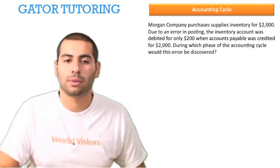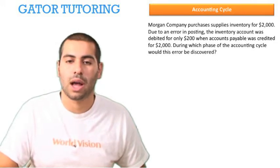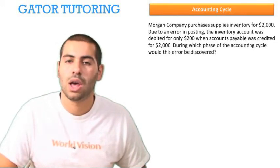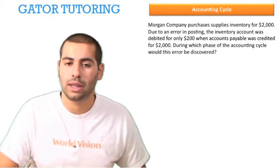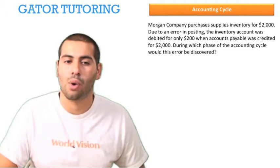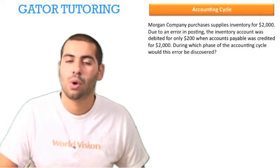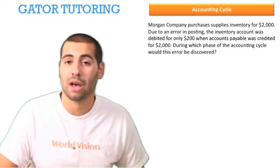Morgan Company purchases supplies inventory for $2,000. Due to an error in posting, the inventory account was debited for only $200 when accounts payable was credited for $2,000.